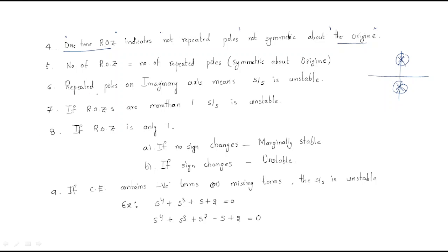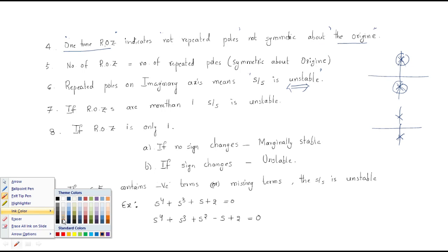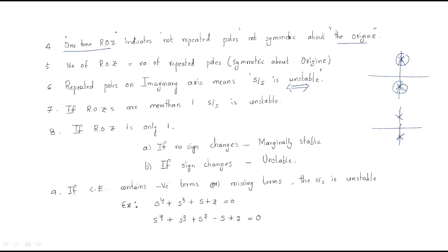Point six: repeated poles on the imaginary axis means the system is unstable. If we have two poles on the imaginary axis — no problem. But if another two poles are added on the imaginary axis (repeated poles), then the system is directly an unstable system.